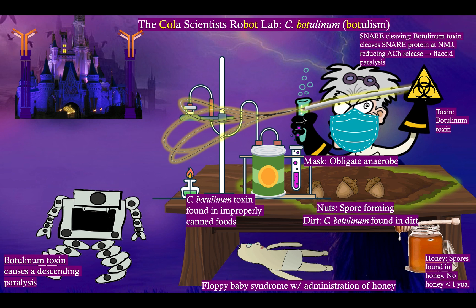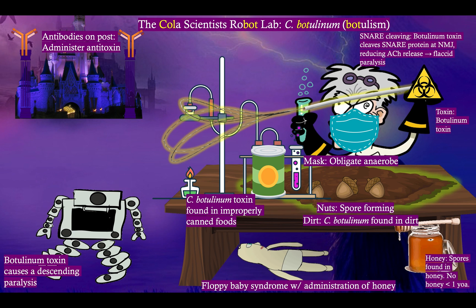The mad scientist is not evil — he has the treatment for botulism: anti-toxins administered post-exposure. Notice the posts by his lair with antibodies on top — we administer antibodies acting against the toxin. And that is the end of our story at the Cola Scientist's Robot Lab.